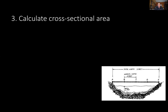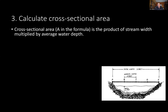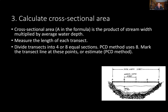Once the transect is set up, calculate the cross-sectional area — letter A in the formula — which is stream width multiplied by average depth. First measure the length of the transect (stream width), then divide it into equal sections. Some methods use four equal sections; the Pierce Conservation District method uses eight. In whatever method you use, take a series of measurements and then average them.